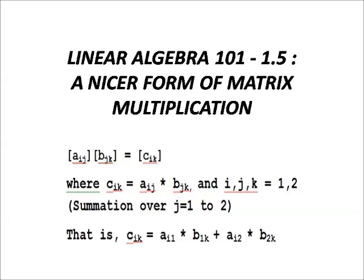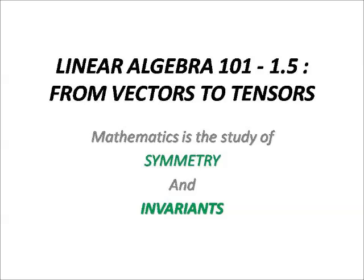In a nicer form of matrix multiplication, we have A_ij representing one matrix, B_jk representing the right-hand side matrix. The answer is C_ik, where C_ik equals the sum over j of A_ij times B_jk.